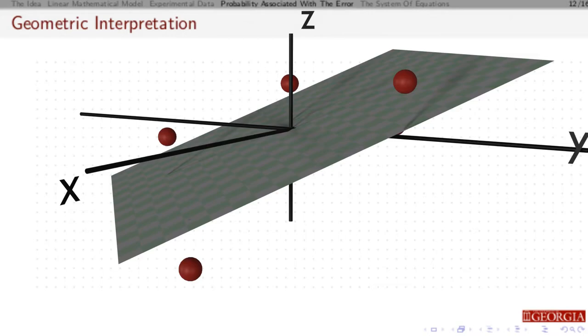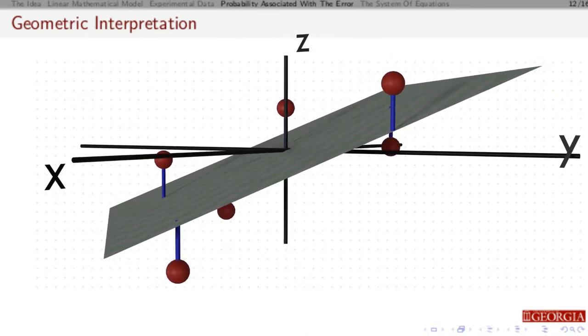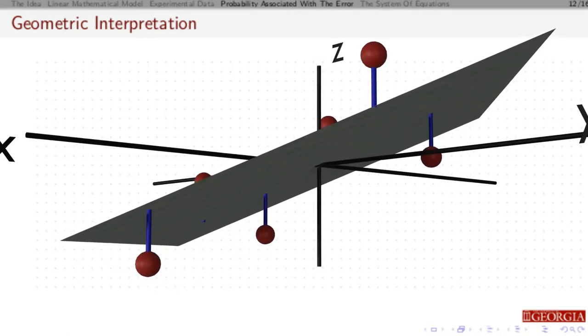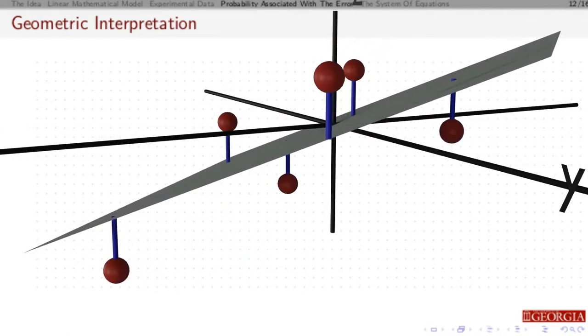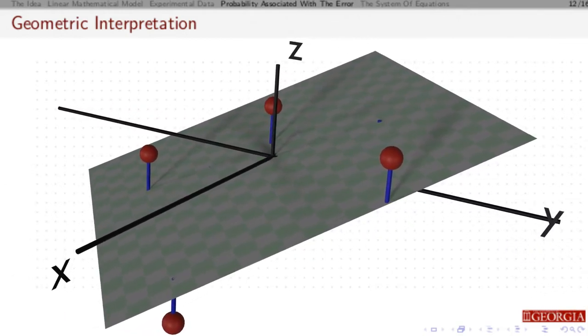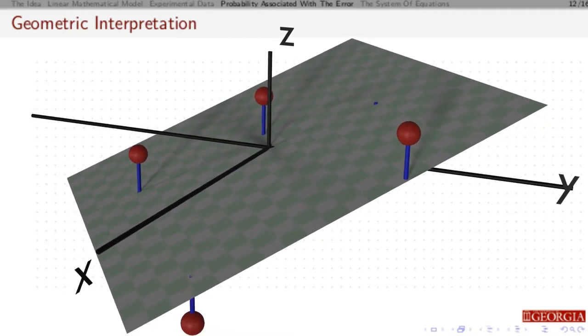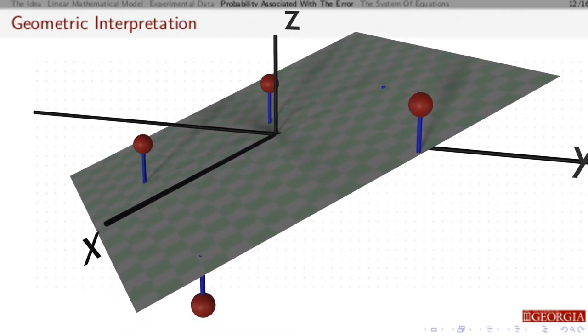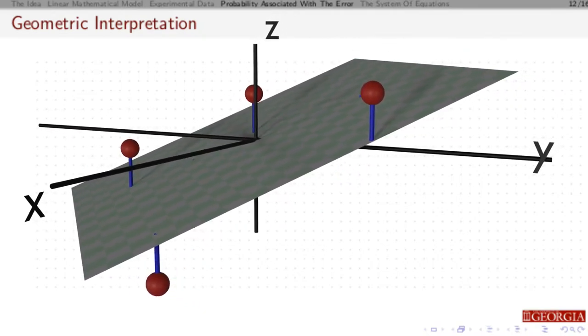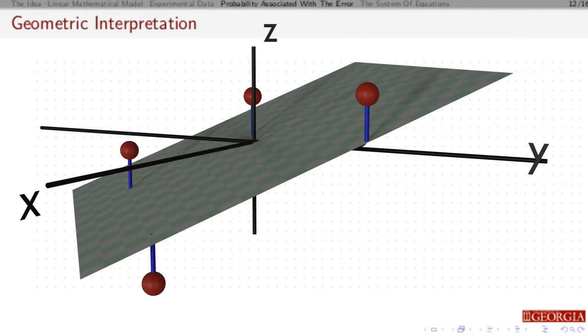We can think of the error here as the vertical distance. So it's the distance up and down in the Z direction away from the plane. And if we add up those measurements or those distances up and down, what we're trying to do is we square that and we add the squares of those distances and we want to make that sum of the squares of those distances as small as possible. And the plane that will minimize those distances is going to be our linear least squares best fit.